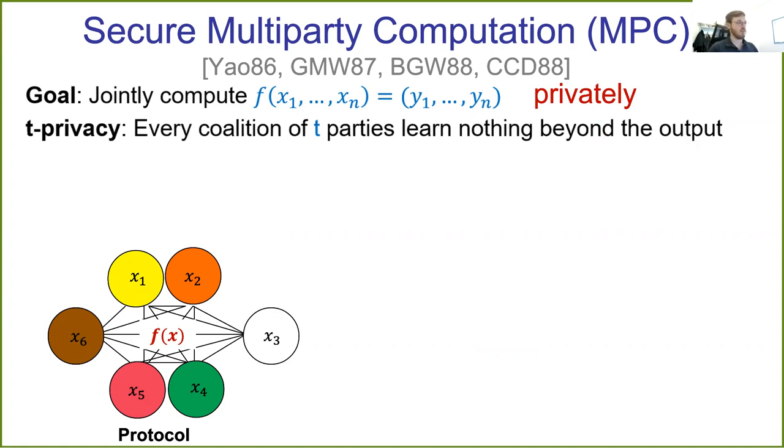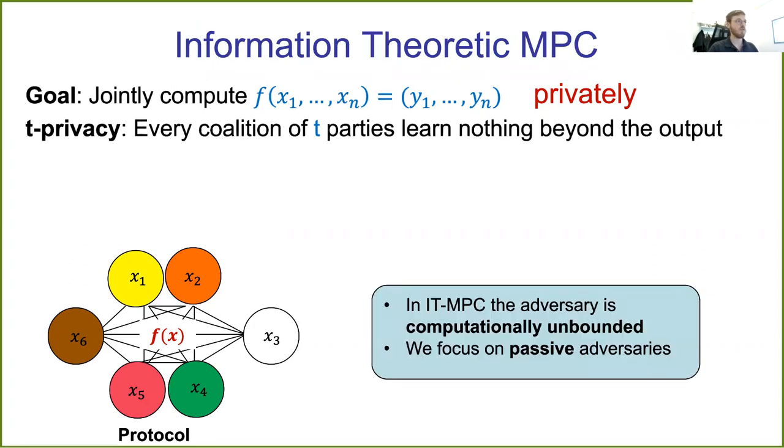Privacy in protocols means that every coalition of up to t parties learns nothing beyond the output of the functionality. We focus on information theoretic MPC, where the adversaries are computationally unbounded, which means the simulation of the adversary's view must be either statistical or perfect. And we focus on passive adversaries, which must adhere to the protocol and not deviate.